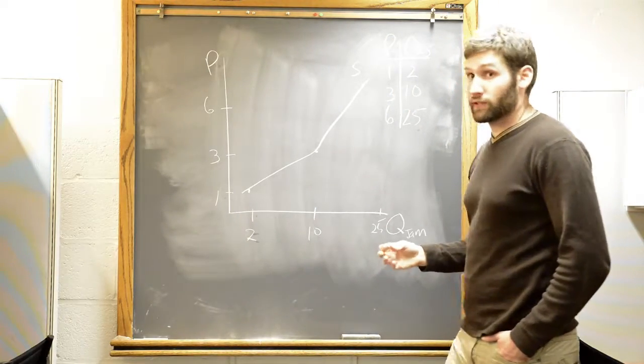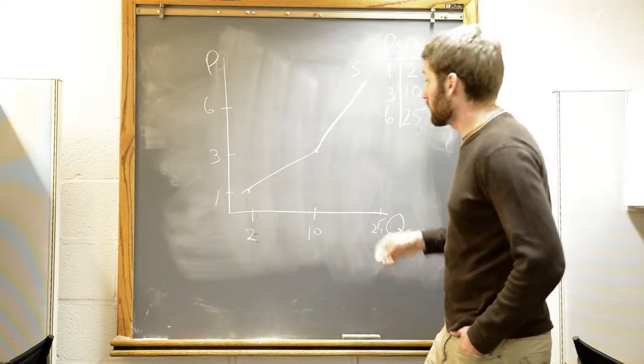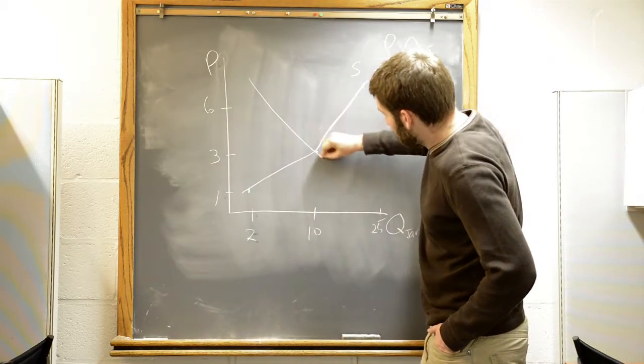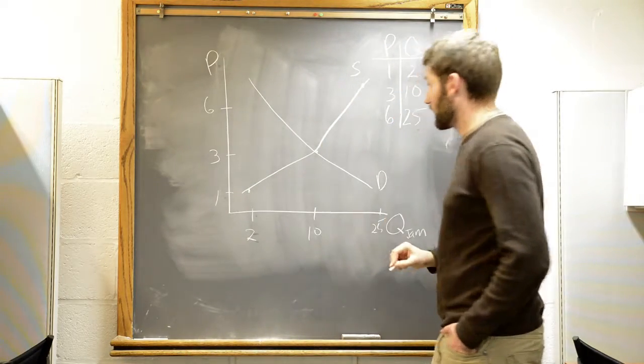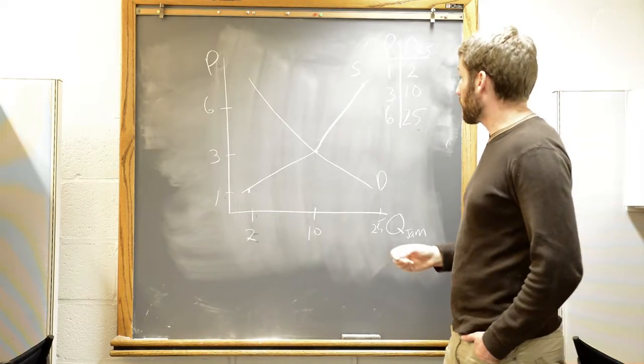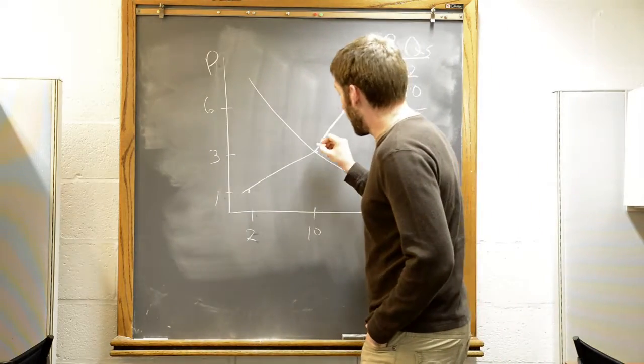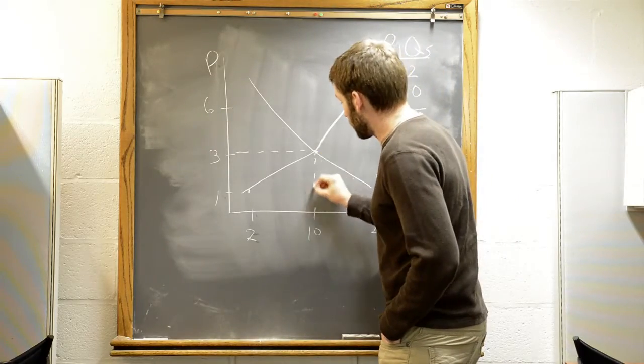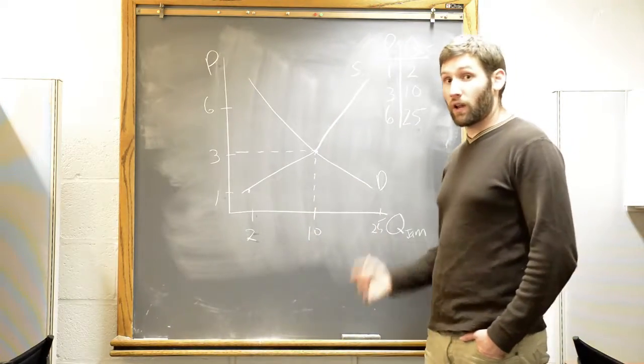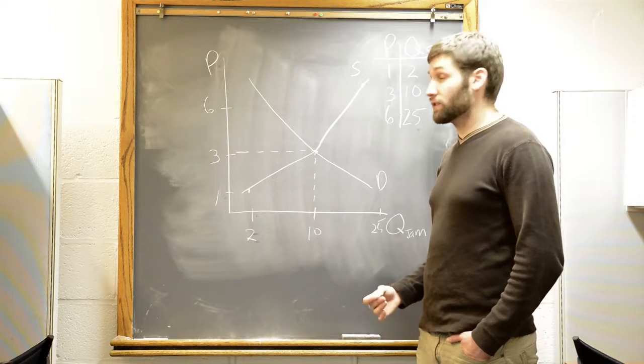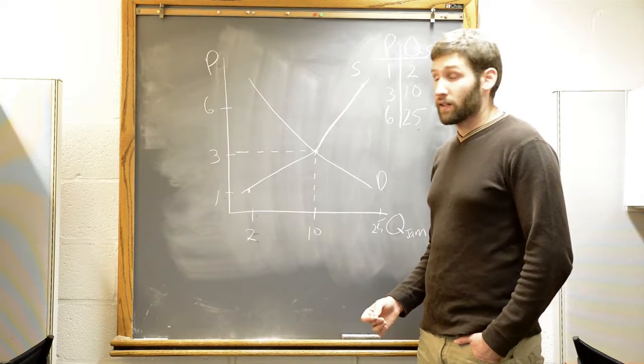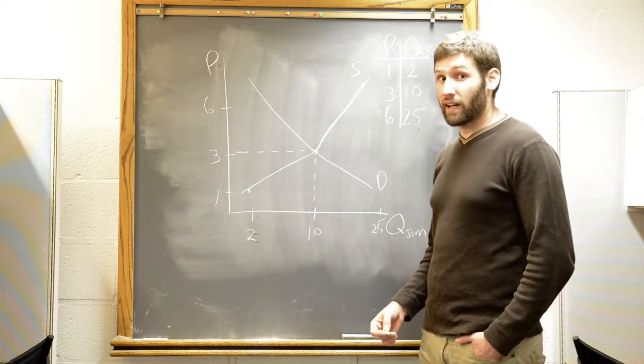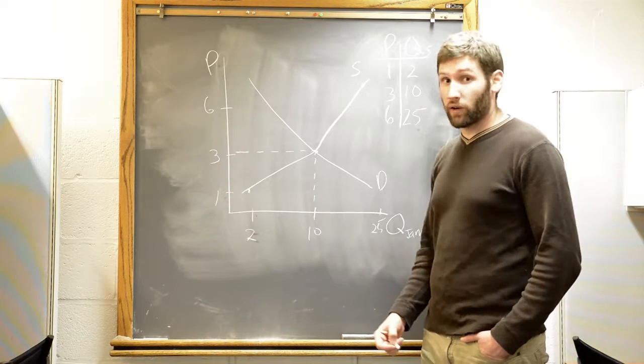Now, if we call the demand schedule, it looks something like this. So that's our demand curve. And what we notice here is that at a price of $3, there's both 10 units of jam supplied and 10 units of jam demanded. So we call that the market clearing price, or the equilibrium quantity.